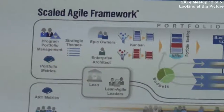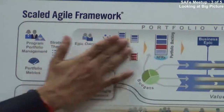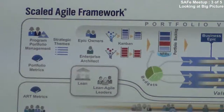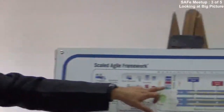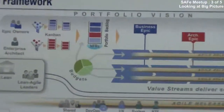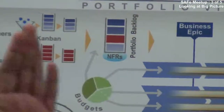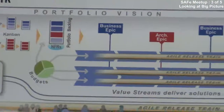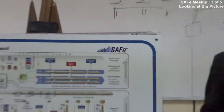They implement Kanban at this level with multiple stages — something in an ideal state, something in review state, something requiring analysis — then it goes into a portfolio backlog and then implementation. Epics which get approved pass through and start lying in a portfolio backlog, meaning the work has not yet started even though they are approved.